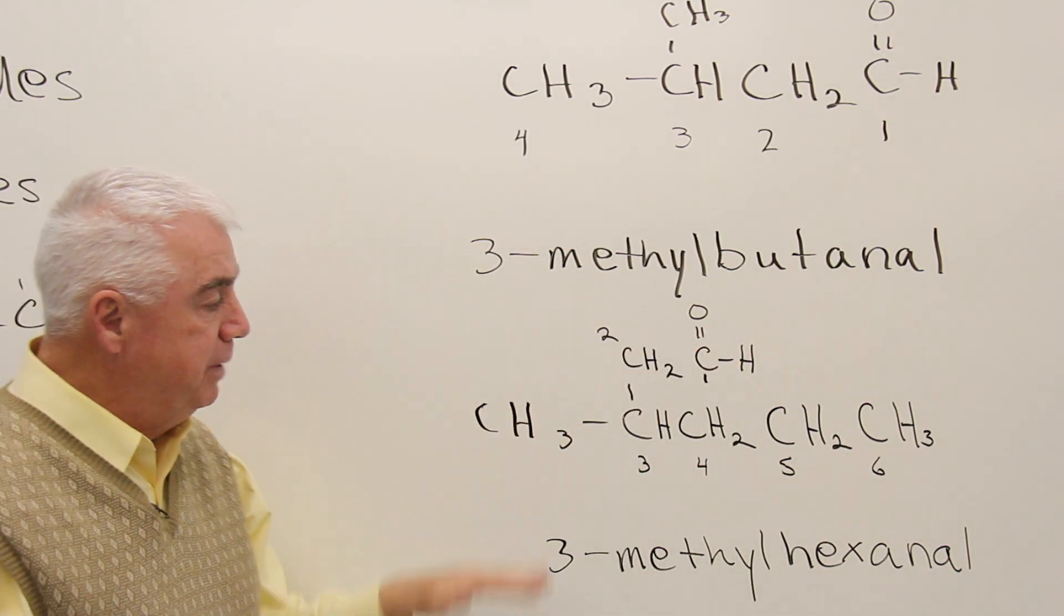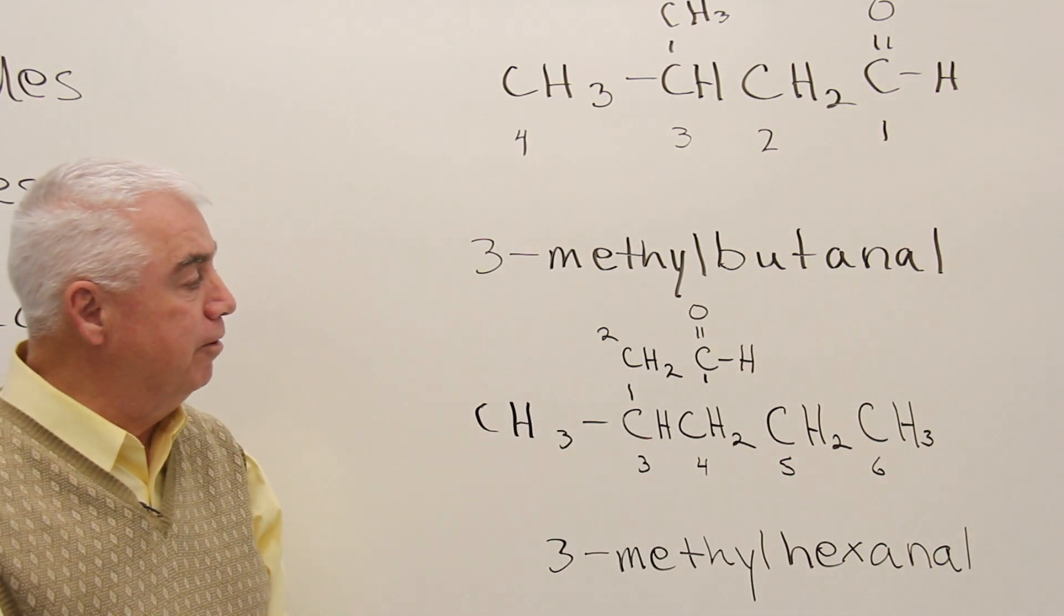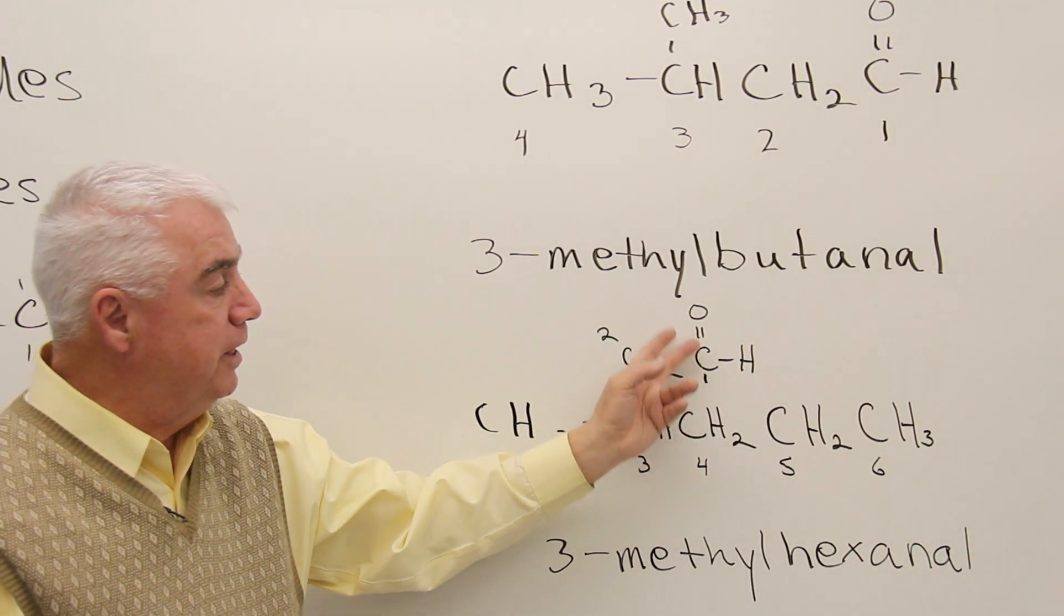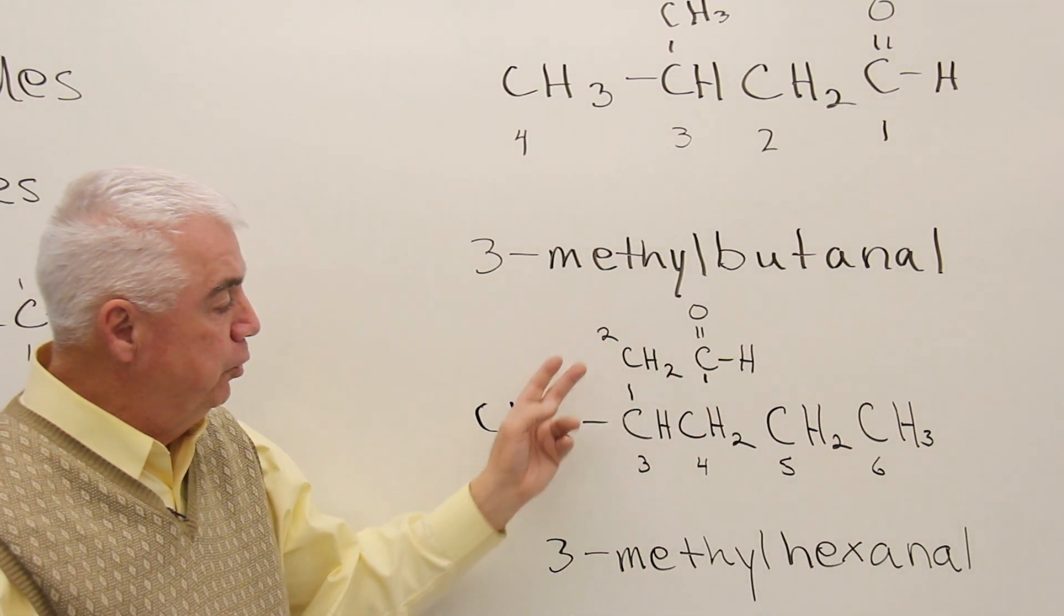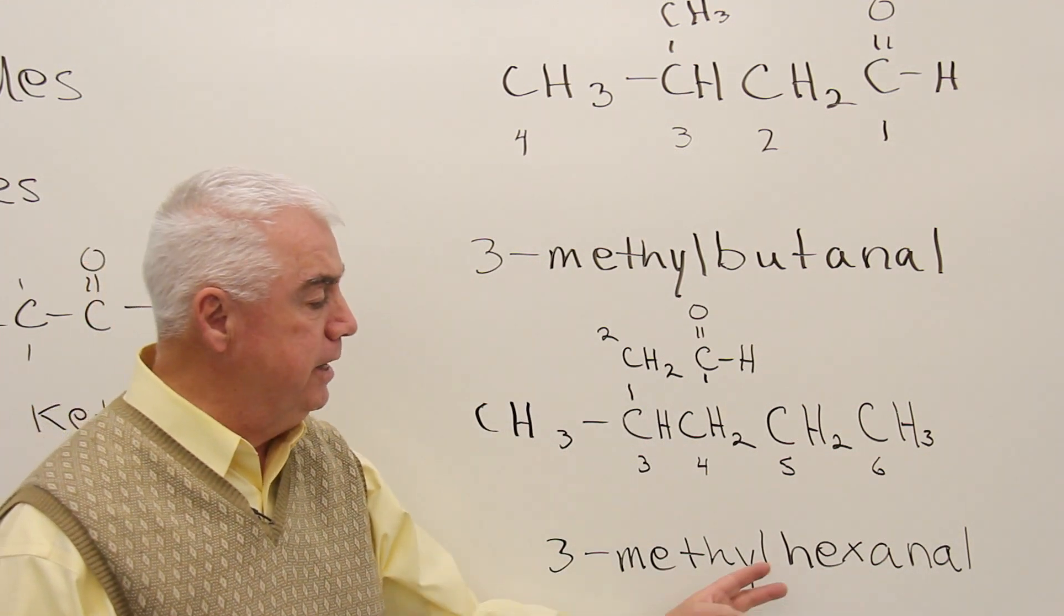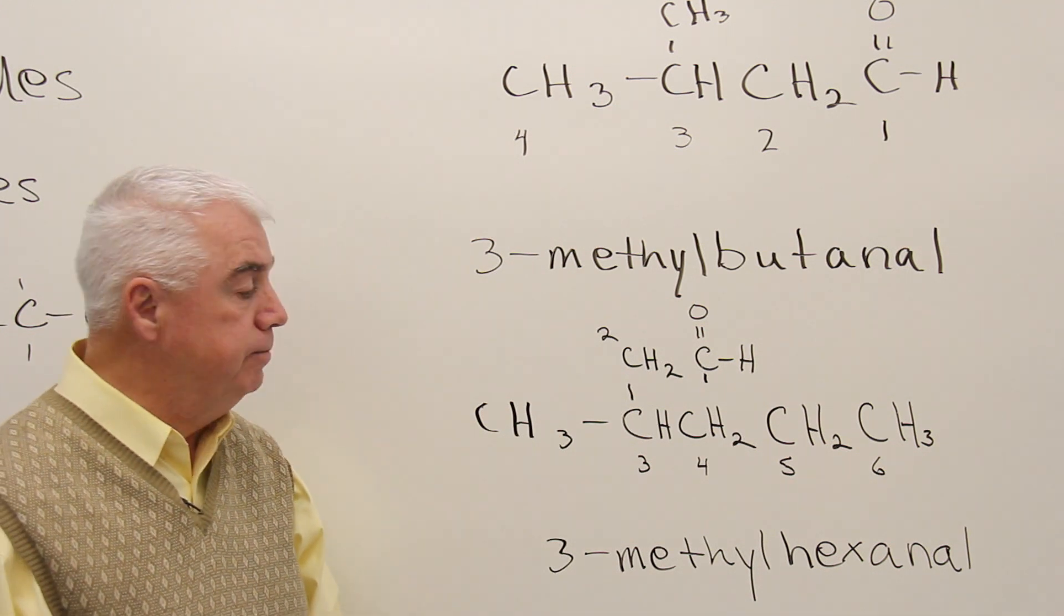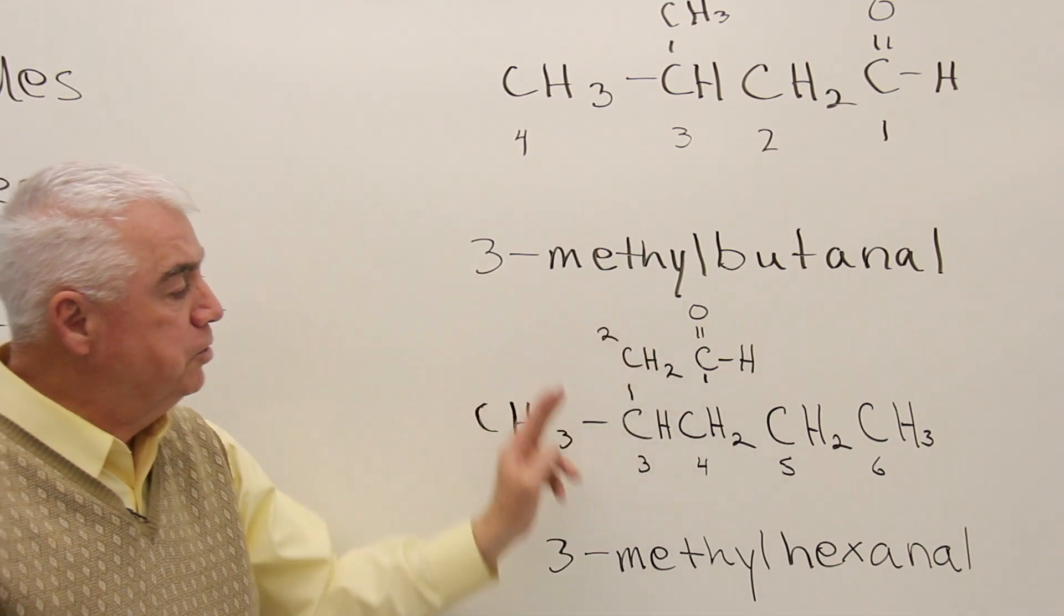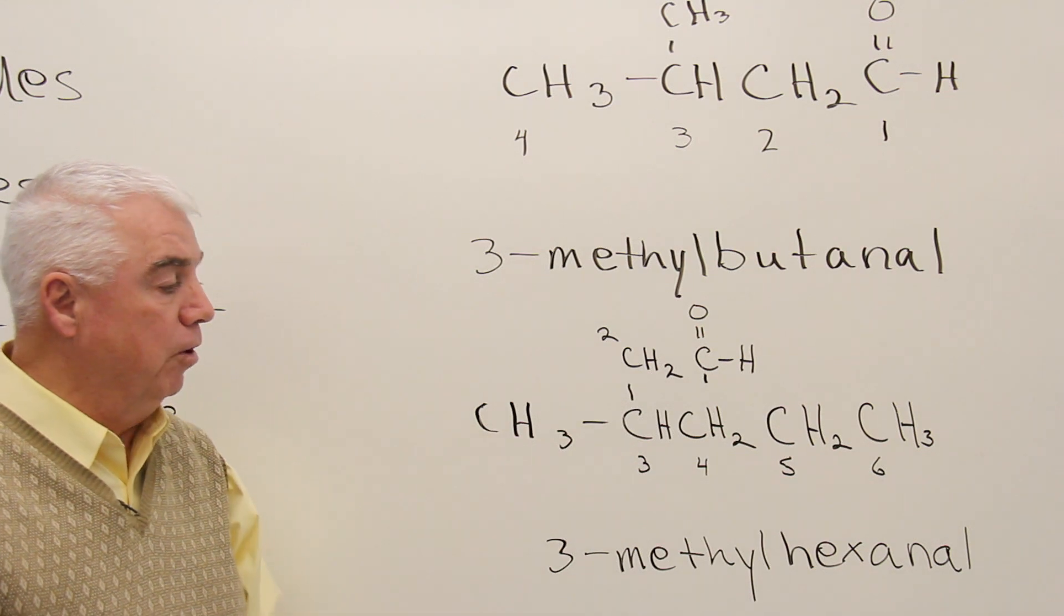Here's another structure. Be tempting to go with this as the longest chain, but it doesn't include the carbon with the functional group. And if we do that, we see again that it's an aldehyde. We want the aldehyde to be as low as possible. So this is going to be position one, two, three, four, five, six. The base word will be derived from hexane. We'll drop the E ending, change it to AL reflecting the aldehyde. And here at position three, again we have a methyl group that wasn't included in the name of that longest chain. So it's 3-methylhexanal.